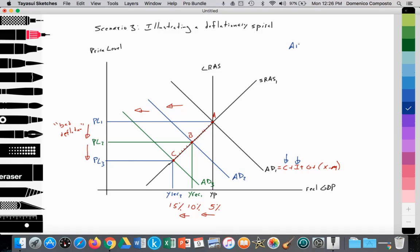Where AD1 equals SRAS1, which is equal to LRAS, it provides an equilibrium price level at PL1, and provides an equilibrium level of real GDP output at YP. We're at full employment. We're at point A, and the economy is doing quite well.